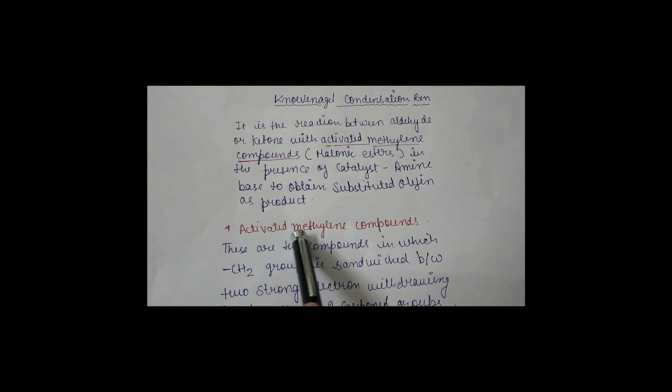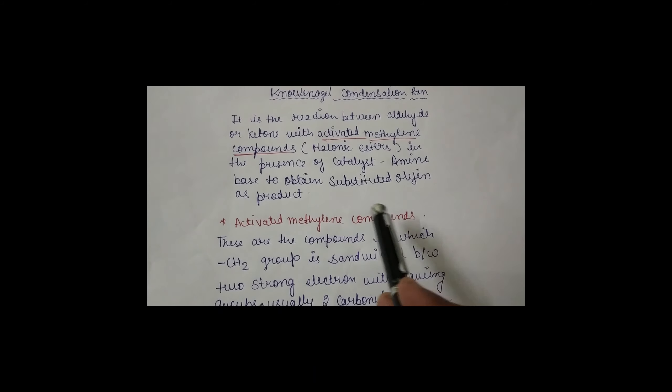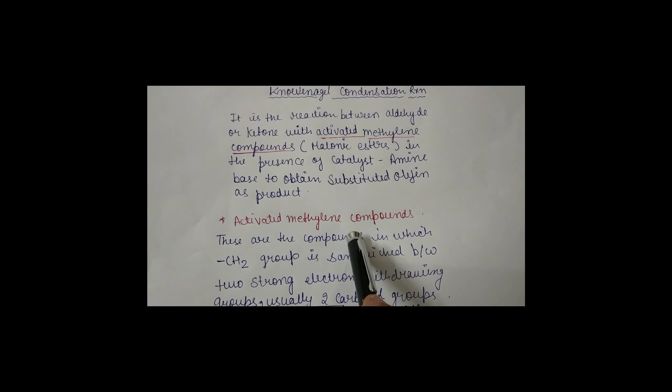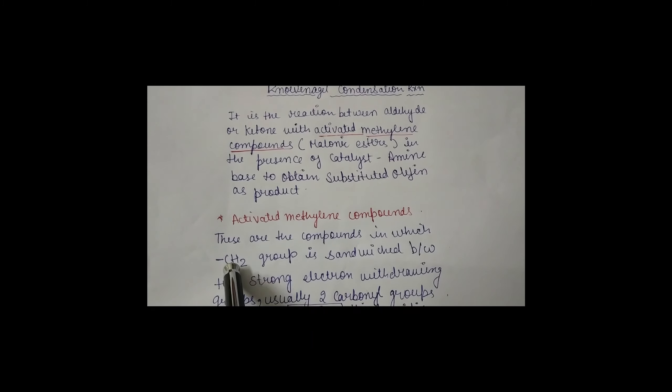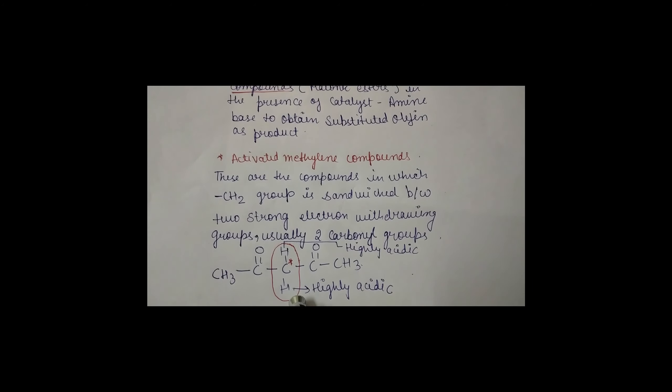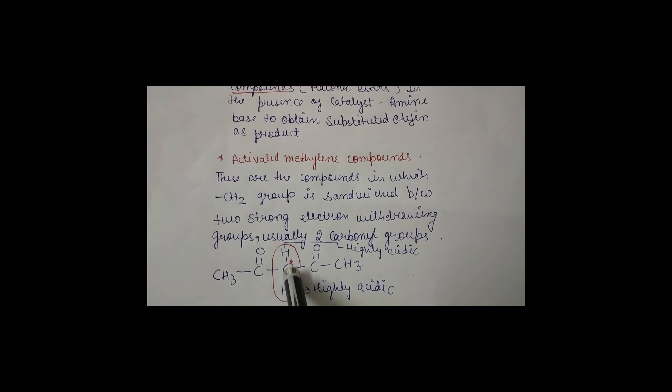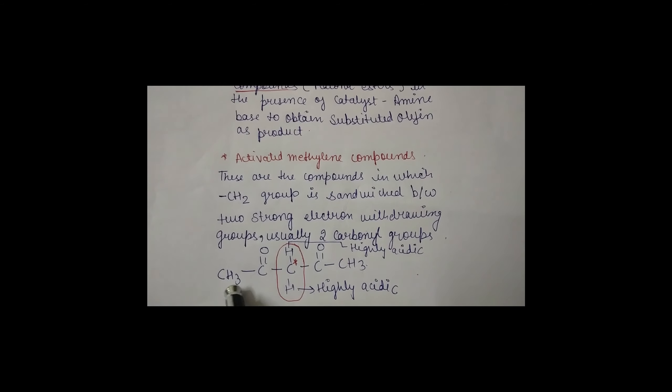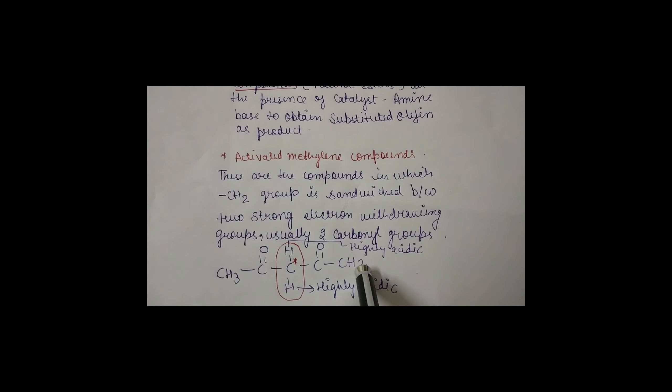Activated methylene compounds are those compounds in which a CH2 group is sandwiched between two strong electron withdrawing groups. They are usually two carbonyl groups. Here you can see an example — this CH2 group is present between two carbonyl carbons, and they act as strong electron withdrawing groups.